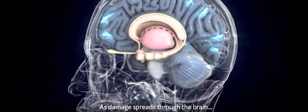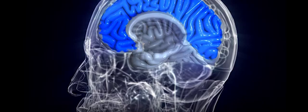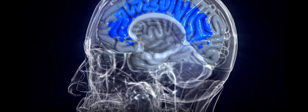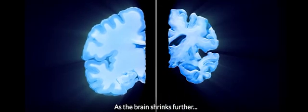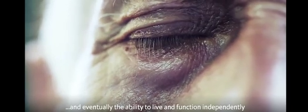As damage spreads through the brain, the cortex becomes thinner and more memories are lost. Although emotional responses can often remain, as the brain shrinks further it slowly alters personality and behavior, and eventually the ability to live and function independently.